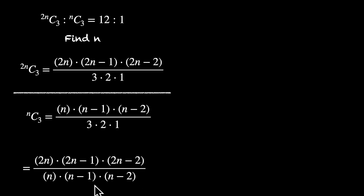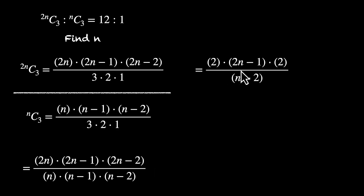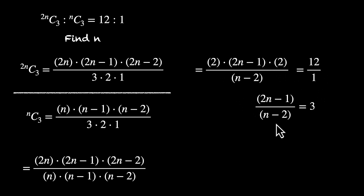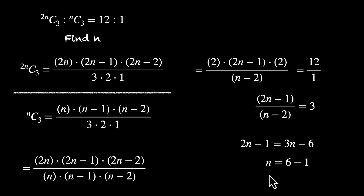We can cancel some terms: 2n cancels with n leaving 2, and (2n-2) cancels with (n-1) leaving 2. So this becomes 2 times (2n-1) times 2 divided by (n-2), which equals 12. That gives us 4(2n-1) over (n-2) equals 12, so (2n-1) over (n-2) equals 3. Cross multiplying, 2n-1 equals 3n-6, so n equals 5.